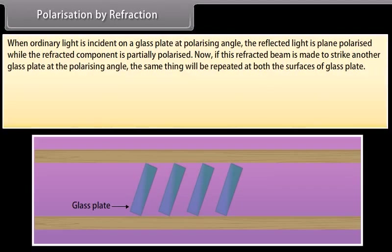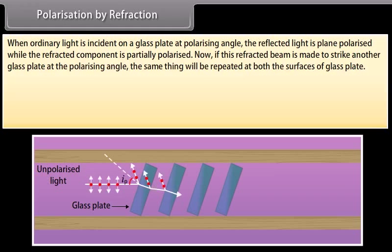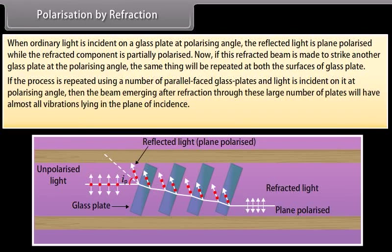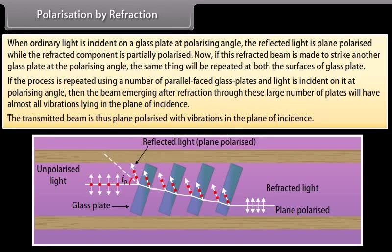When ordinary light is incident on a glass plate at the polarizing angle, the reflected light is plane polarized while the refracted component is partially polarized. If this refracted beam strikes another glass plate at the polarizing angle, the same process repeats at both surfaces. If the process is repeated using a number of parallel glass plates and light is incident at the polarizing angle, then the beam emerging after refraction through these plates will have almost all vibrations lying in the plane of incidence. The transmitted beam is thus plane polarized with vibrations in the plane of incidence.